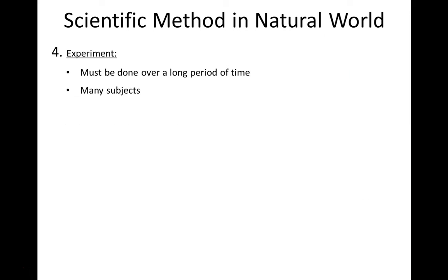The next part of the scientific method is to experiment. You have to design an experiment that will actually test your independent variable — is it actually influencing your dependent variable? Experiments must be done over a long period of time. I can't just drink coffee through a straw one day and say my teeth have less stains. I have to do it for a long duration, maybe months. I also have to have many subjects — not just me, but several people doing this at the same time. You always have to have a control group: something you're going to compare your experimental group to in order to see if your experiment worked.